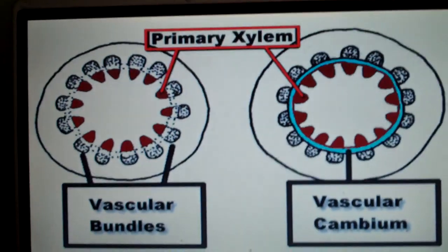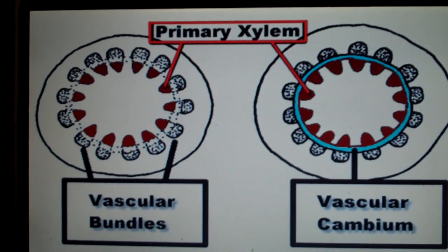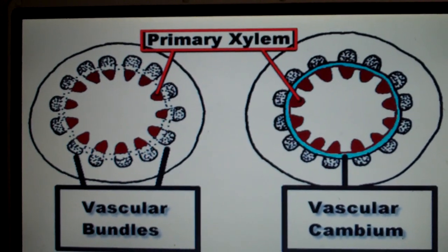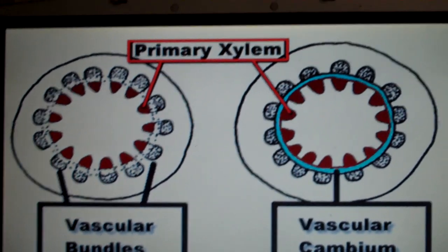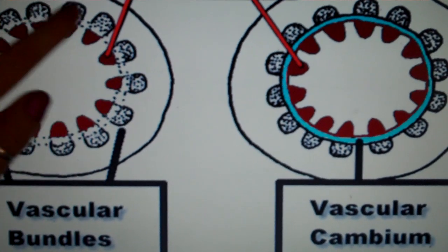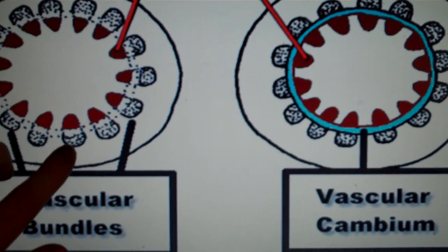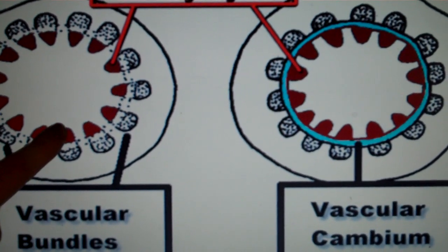The internal structure of the stem consists of ground tissue as well as vascular tissue. The vascular tissue in dicots is composed of vascular bundles arranged in this manner, with the primary phloem on the outside and the primary xylem on the inside.